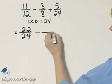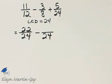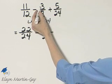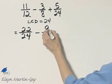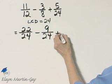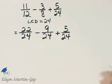minus 8 times what number gives me 24? Well, 8 times 3 is 24. Now, remember the 3 because I must multiply this numerator, no matter what it is, by 3. 3 times 3 is 9, plus the last fraction already has a denominator of 24.